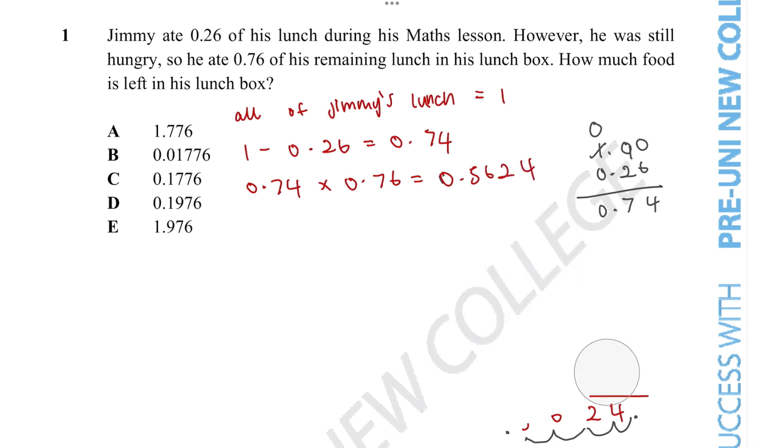Let's quickly erase the working out. So now we know how much of his remaining lunch he ate. In order to figure out how much food is left in his lunchbox, we know after the maths lesson there is 0.74. And we need to minus that by 0.5624. Remember, when we subtract, we have to line up the points.